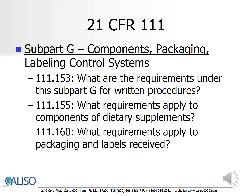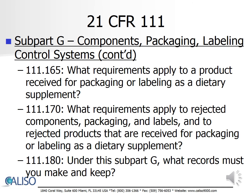Subpart G, Components, Packaging, and Labeling Control Systems, provides detailed requirements for visual examination of all components, requiring the quarantine of components prior to use. Each unique lot must be identified and that unique identifier must follow the component throughout the manufacturing process. In addition, you must clearly identify, hold, and control under a quarantine system for appropriate disposition any component, packaging, or label that is rejected or unsuitable for use.